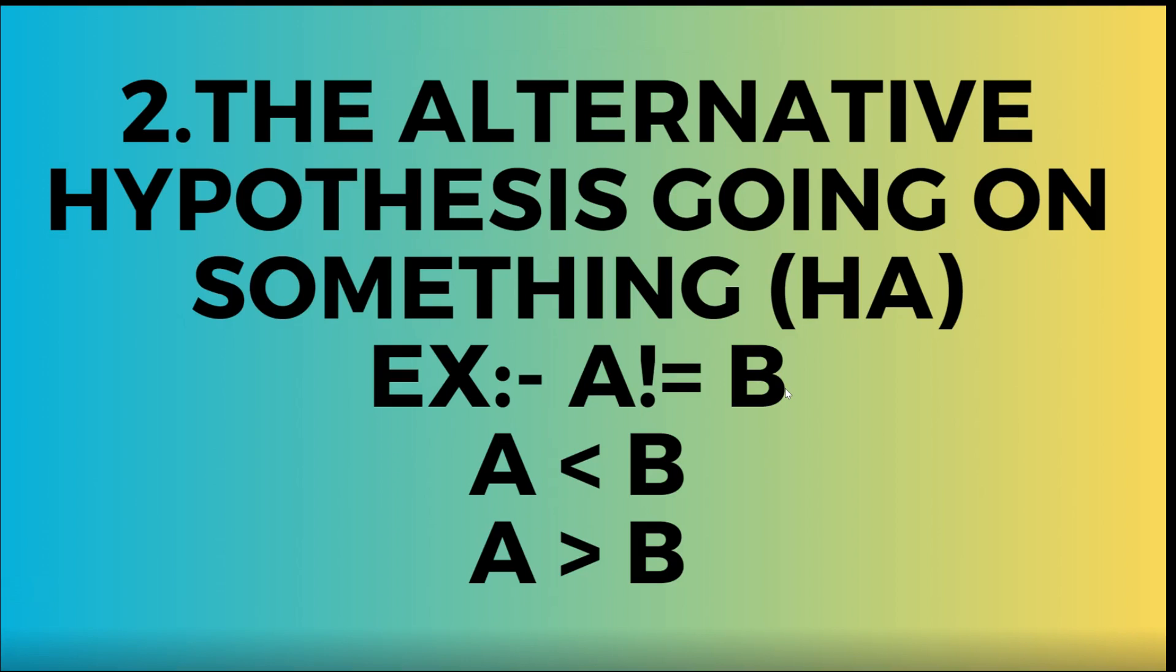Second is the alternative hypothesis, which states something is going on. It is denoted HA, for example A not equal to B, A less than B, or A greater than B.